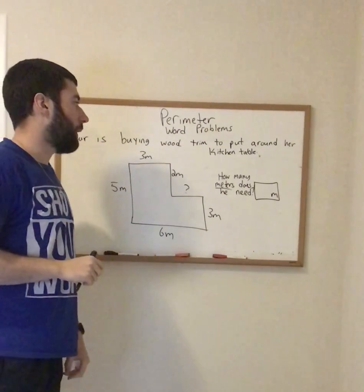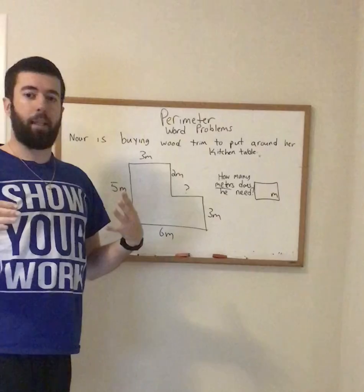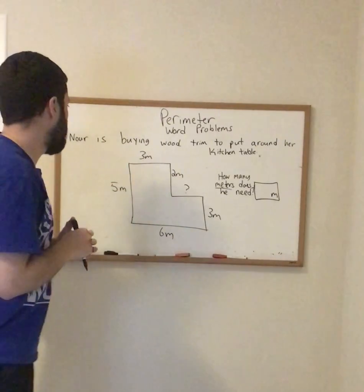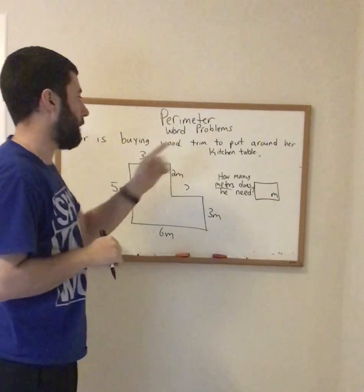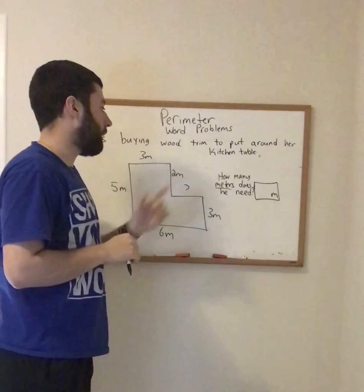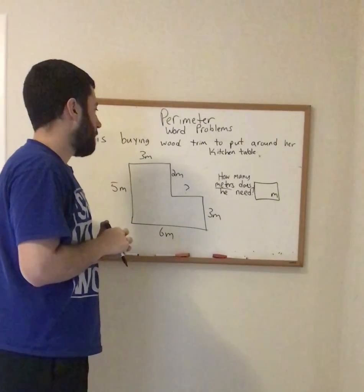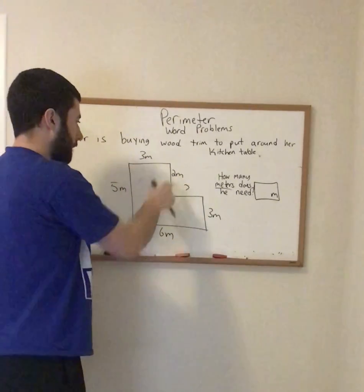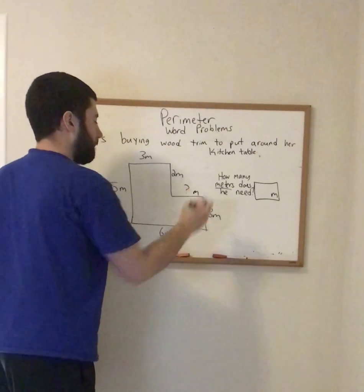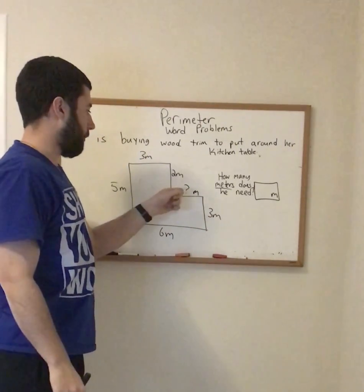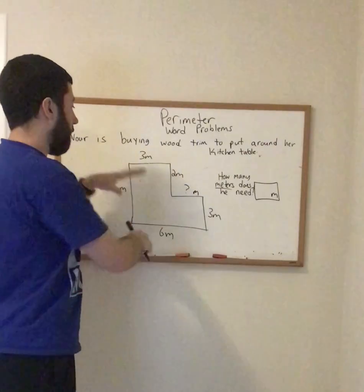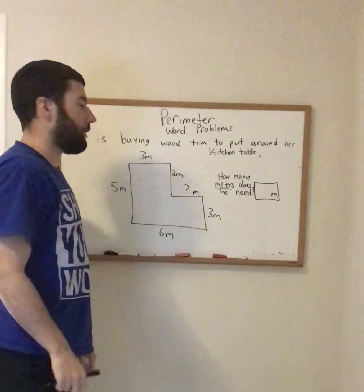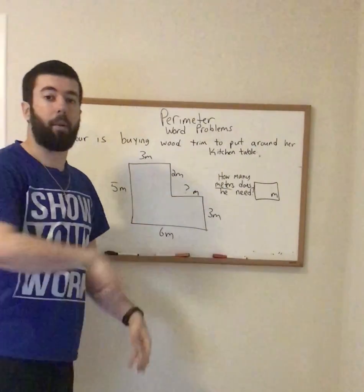I'm going to read it one more time, and this time I'm going to see how am I going to approach my problem. Noor is buying wood trim to put around her kitchen table. How many meters does he need? Okay, so I know I have my kitchen table here, and I know I have to solve this part that's missing first before I add up all my meters to find the perimeter, which is around my figure.